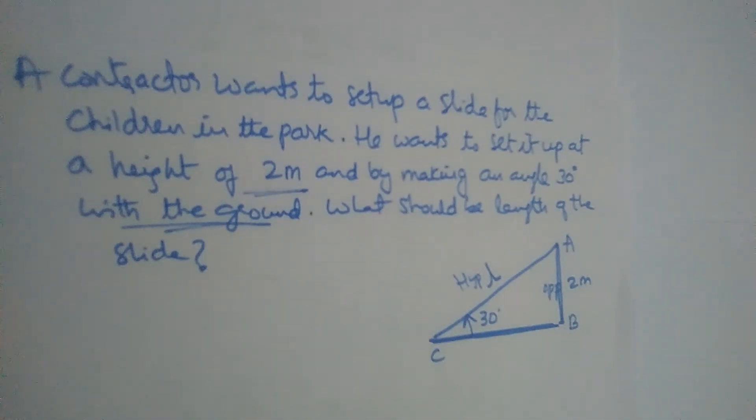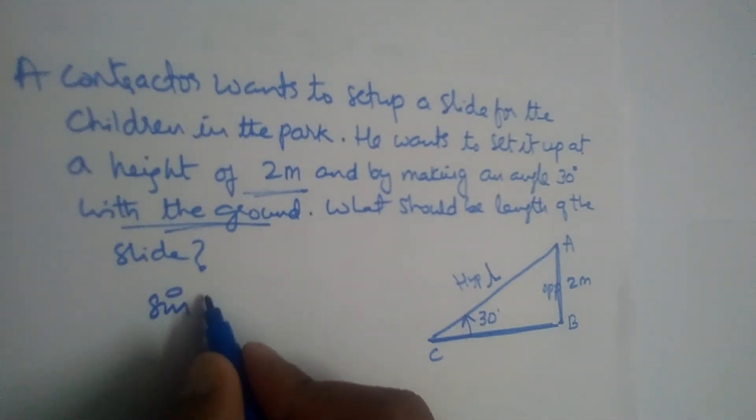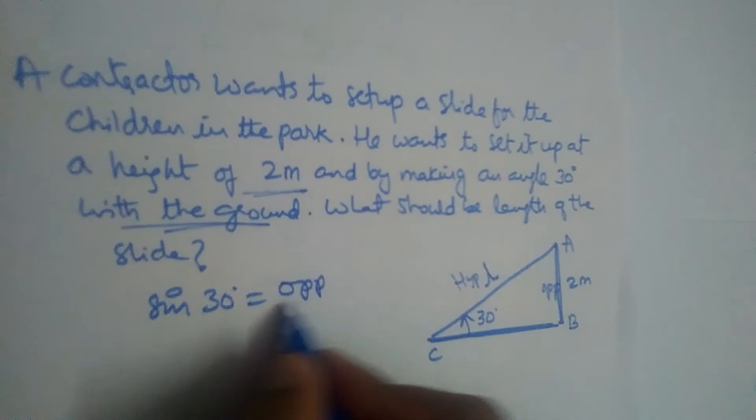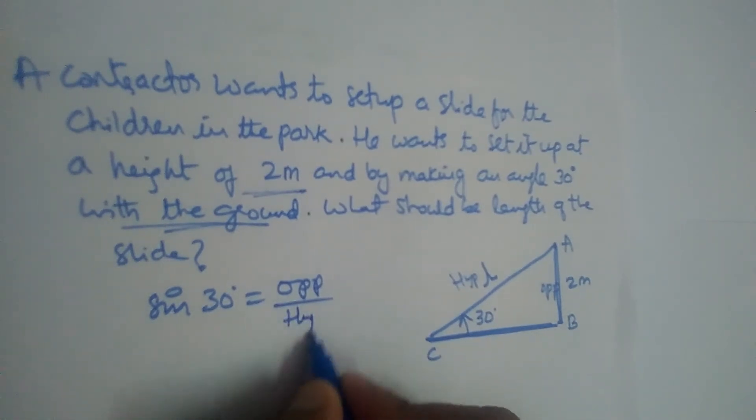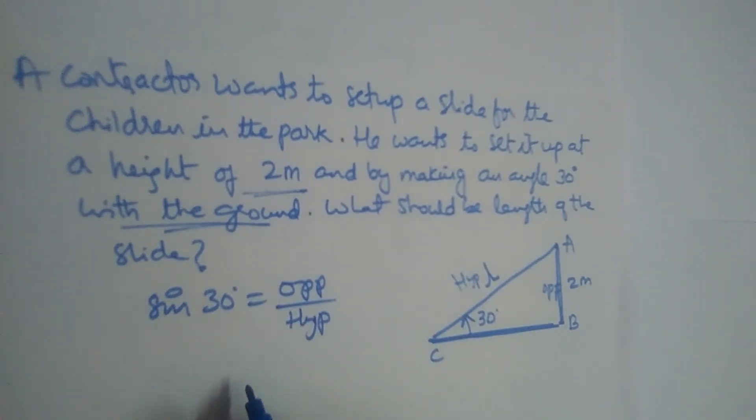So opposite and hypotenuse will come in what formula? Sine formula. So sine 30 is equal to what is sine formula? Opposite divided by hypotenuse.